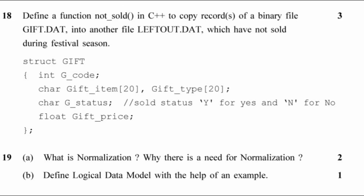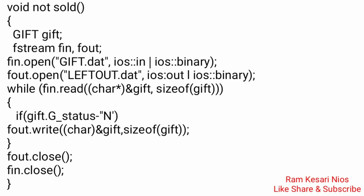Question 18: Define a function notSold() in C++ to copy records of a binary file gift.dat into another file leftout.dat which have not been sold during the festival season. struct gift { int g_code; char gift_item[20]; char gift_type[20]; char g_status; // 'Y' for yes and 'N' for no float gift_price; }; Pause the video and see the answer.